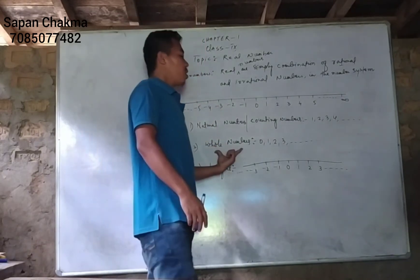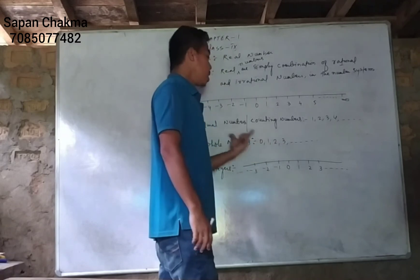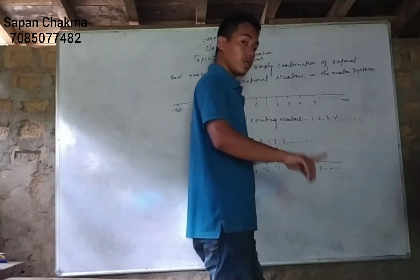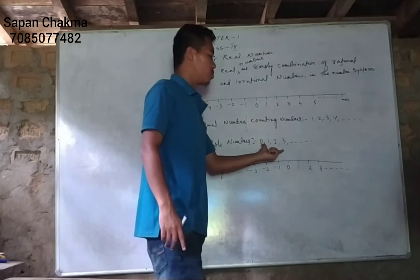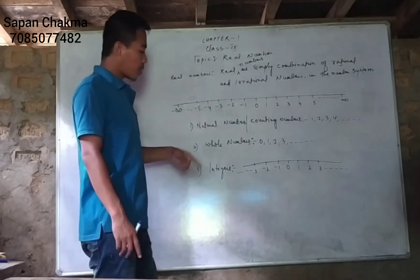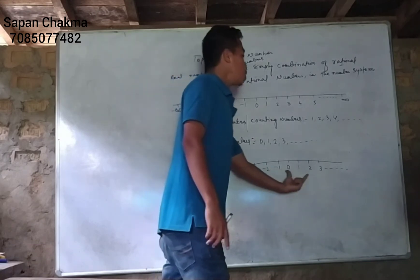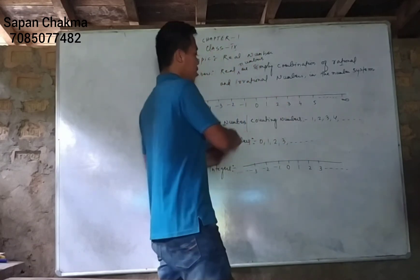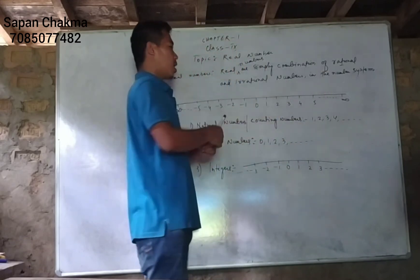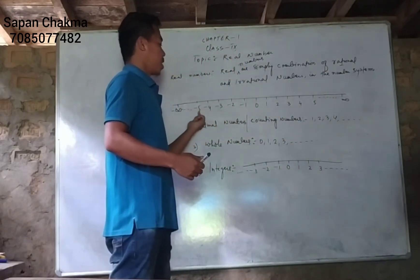The whole number is the natural number including 0. That means, the whole number starts from 0: 0, 1, 2, 3, 4, 5, 6, 7, 8, 9.